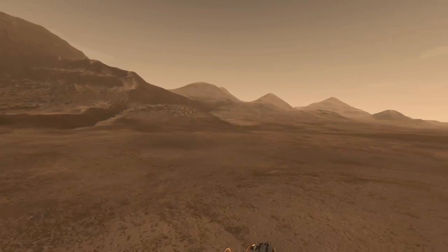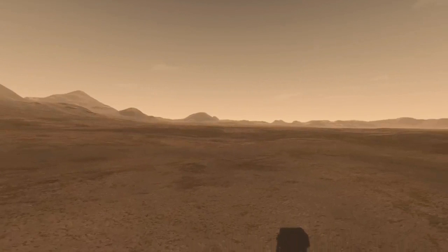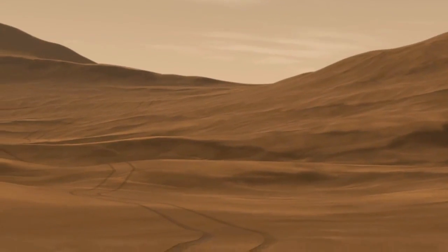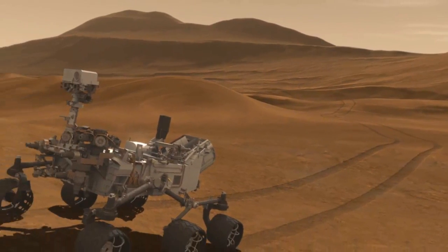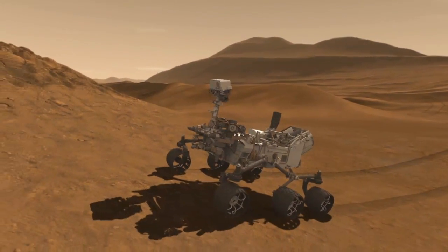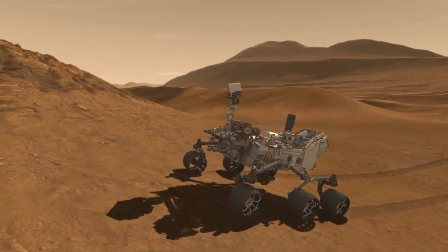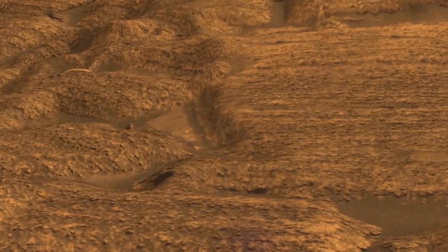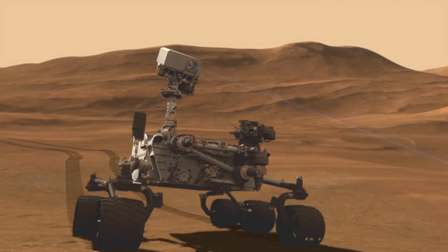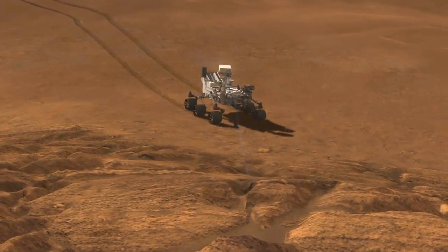The Curiosity rover has ten science instruments, including a gas chromatograph, a gas spectrometer, and a tunable laser spectrometer to identify a wide range of organic compounds. An X-ray diffraction and fluorescence instrument, named CheMin, designed to identify and quantify minerals in rocks and soils.